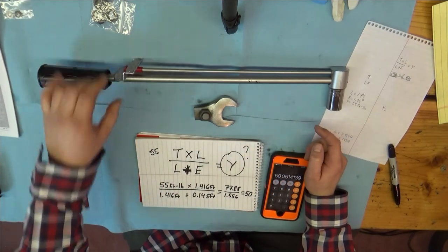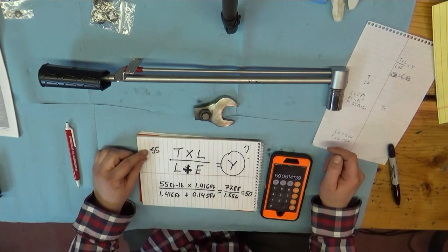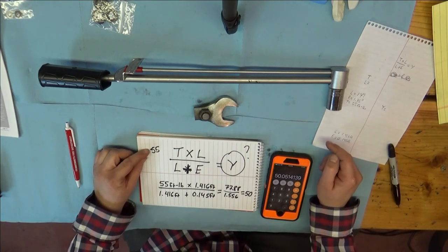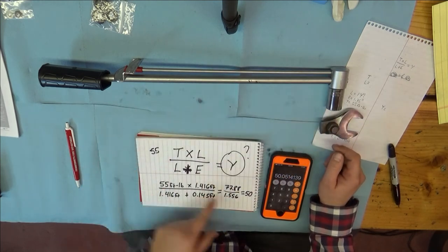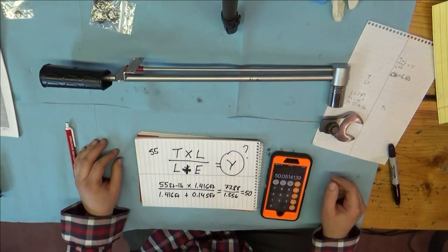when we tighten down to 55 newton meters, or not newton meters, I'm sorry, foot pounds, we really, with this extension on here, need to go 50 on here.